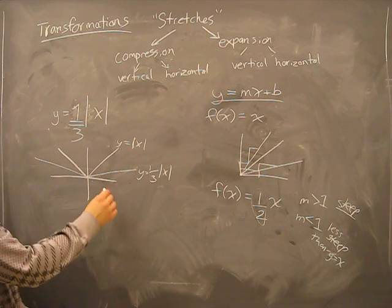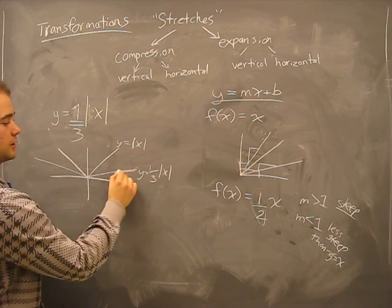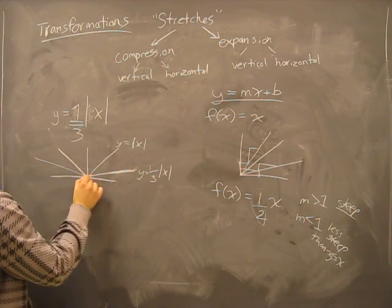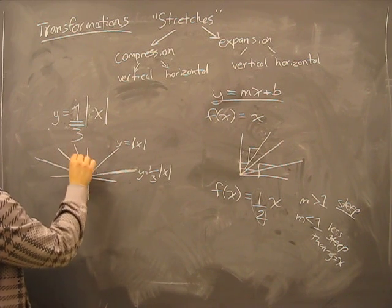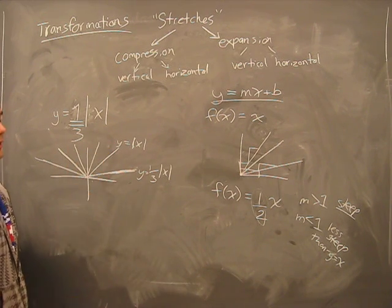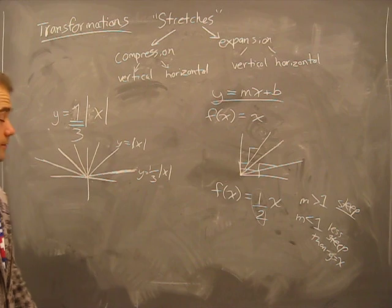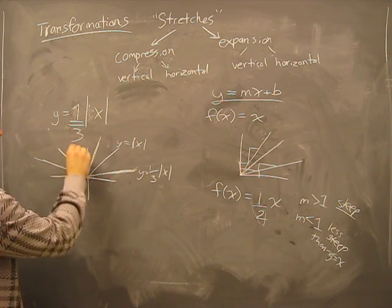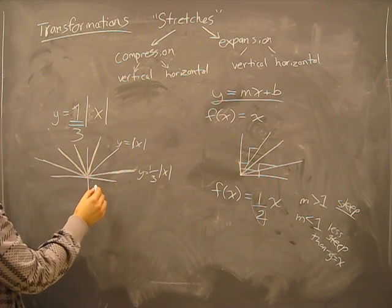Oh, sorry. This would be a vertical compression. And this would be, the last one would be a vertical expansion. Mr. B makes mistakes. Remember, this is where Mr. B made a mistake.